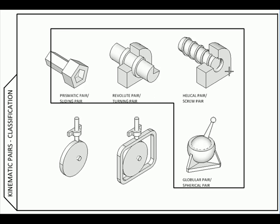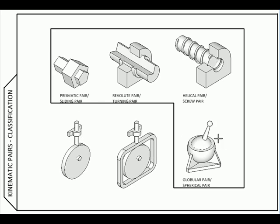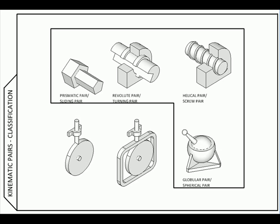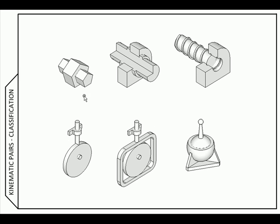Now let us see how to classify them. One criteria for classification could be what keeps the two bodies together. If it is their shape—like a prismatic solid engaging in a prismatic cavity, cylinder in a cylindrical cavity, or a helix in a helical cavity—if the two bodies are kept together by virtue of their shape, then they are called form closed pairs.